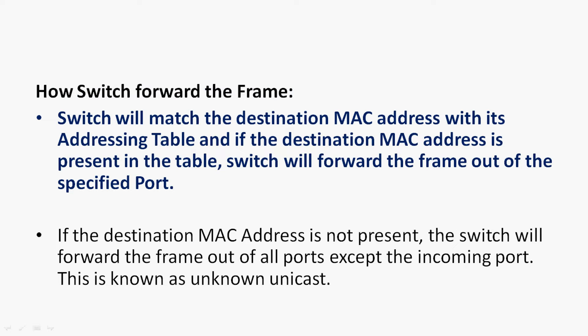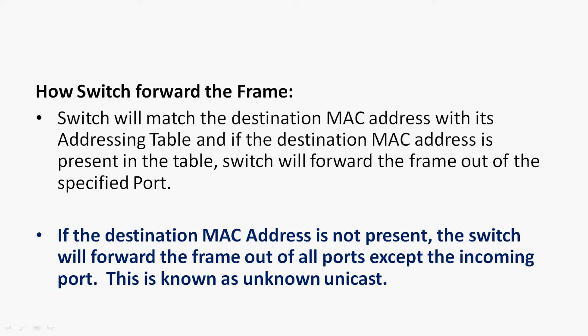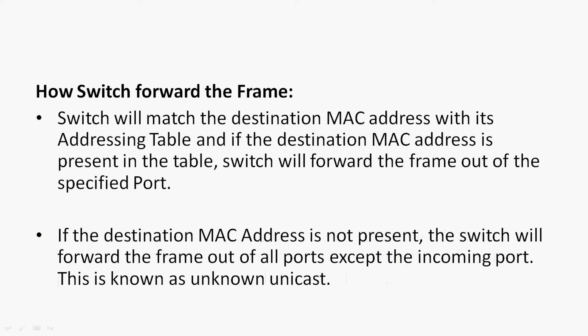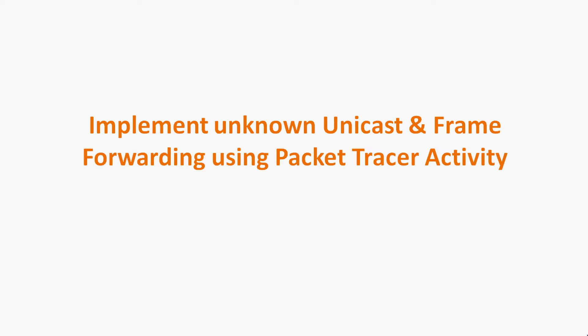Now we will see how a switch forwards a frame. The switch will match the destination MAC address with its addressing table. If the destination MAC address is present in the table, the switch will forward the frame out of the specified port. If the destination MAC address is not present, the switch will forward the frame out of all ports except the incoming port. This is known as unknown unicast.